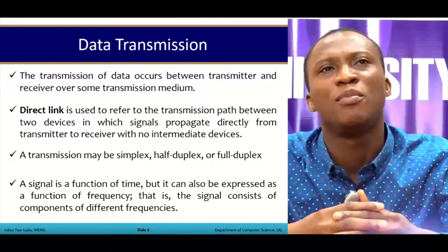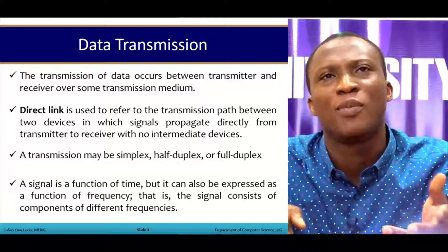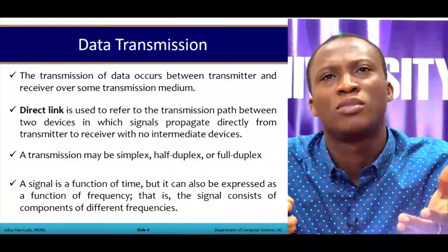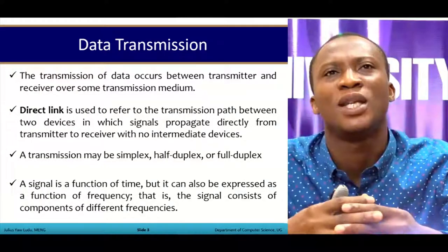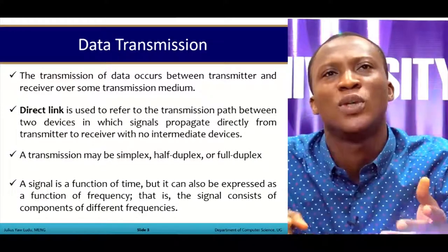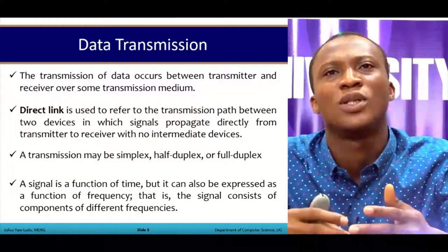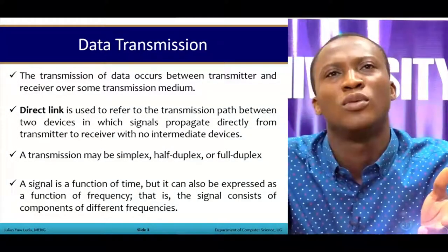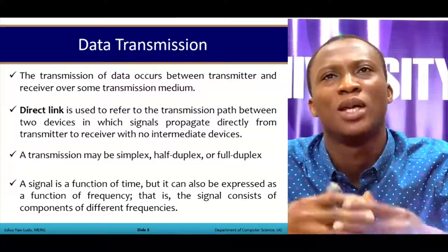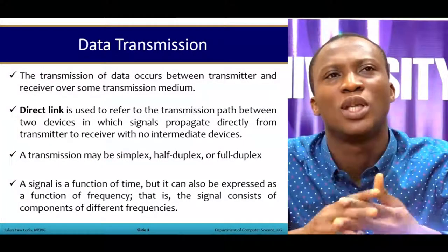A transmission medium can be of three types: simplex, half duplex, and full duplex. Simplex transmission is a unidirectional way of communicating. Half duplex involves communication in both directions but one at a time. Full duplex transmission involves communication in both directions simultaneously.